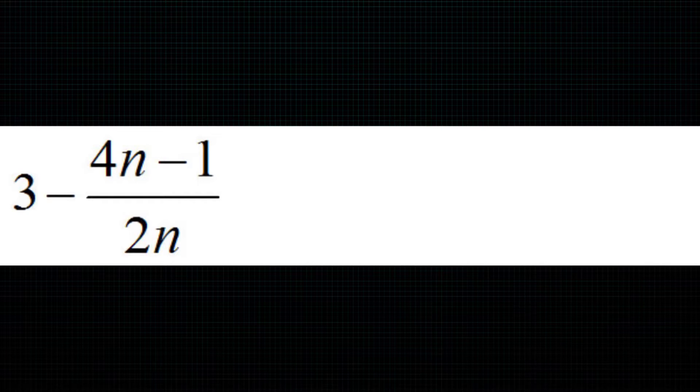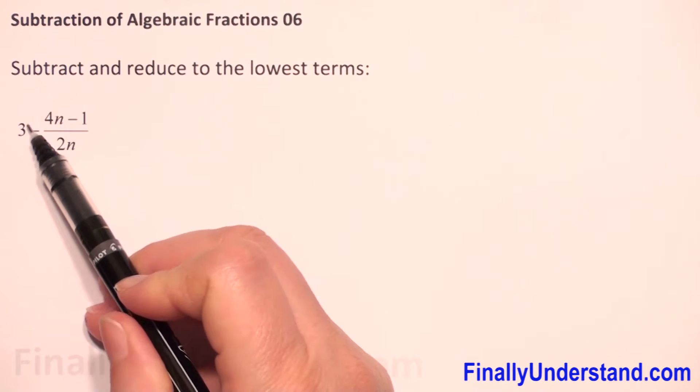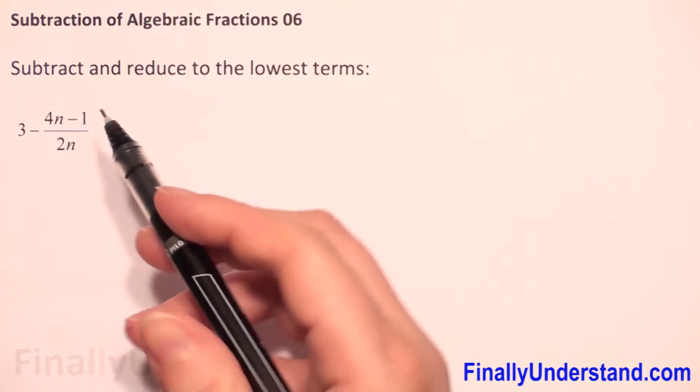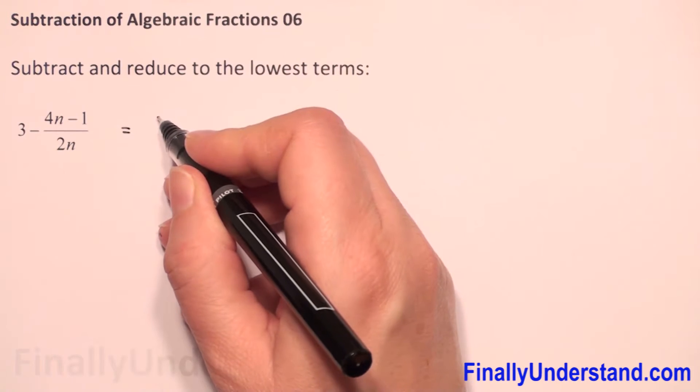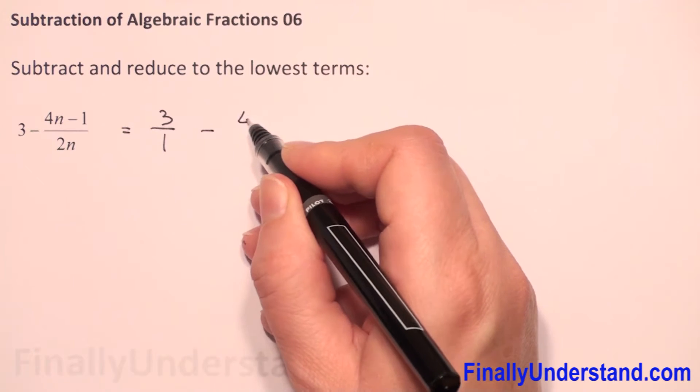We have to subtract algebraic fractions. So first when we have subtraction we need to have the same denominator, and here we have only numbers, so first I will change this number to a fraction. I can put 3 over 1 and the second I will copy.